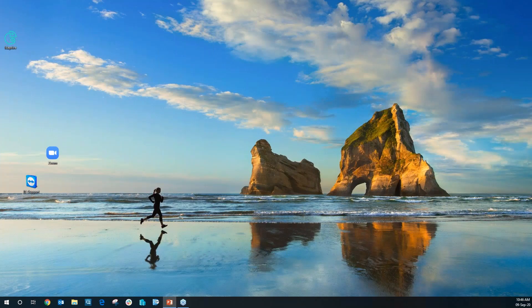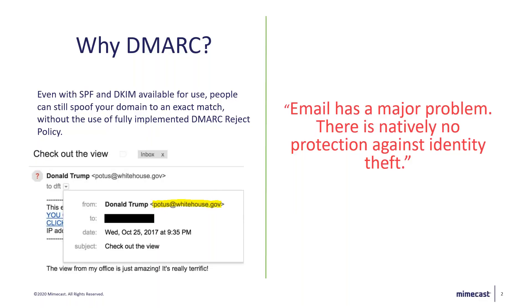Thank you very much. Let me just quickly share my screen and we'll go through what DMARC Analyzer can offer you. DMARC addresses a huge problem — you can still send emails pretending to be absolutely anyone who isn't utilizing the highest standard of DMARC. For example, someone is sending an email as the American president. At the time they weren't using the highest standard of DMARC. Compare that to the UK government — by law, anyone with a .gov.uk domain has to use DMARC now, so this sort of thing wouldn't happen to them.